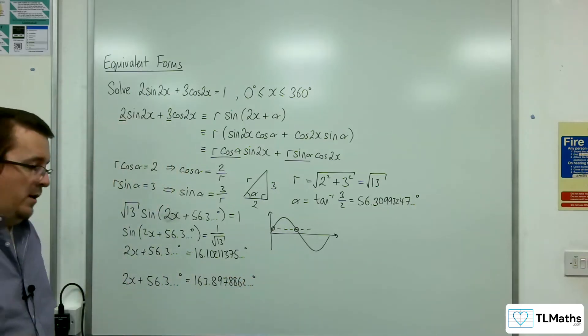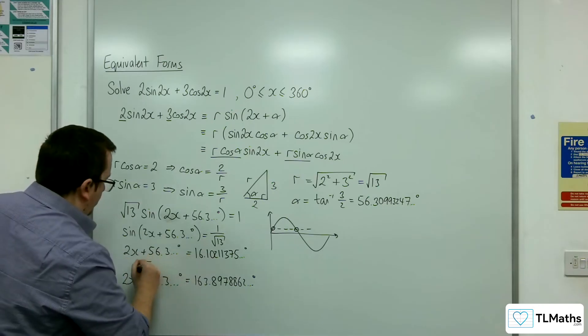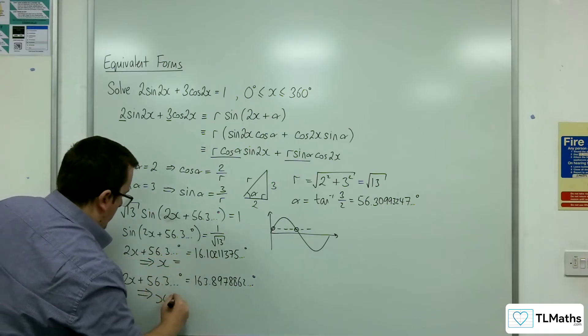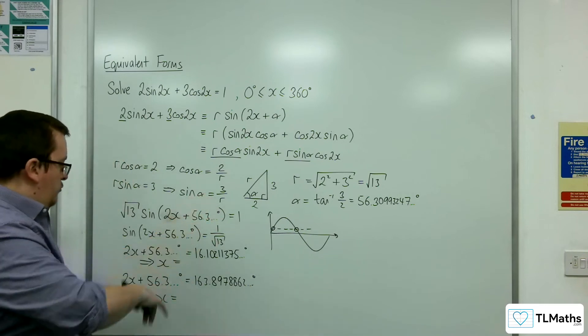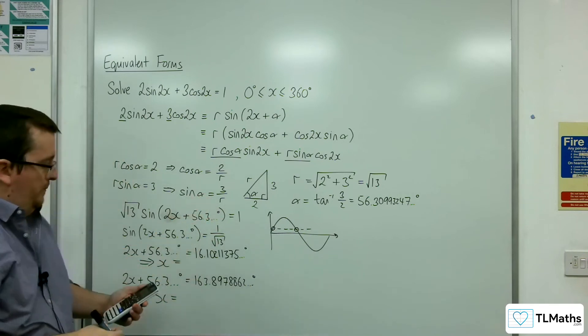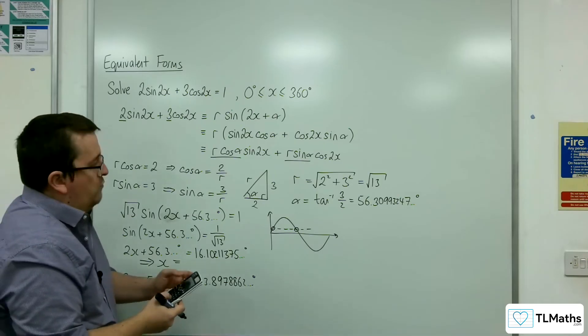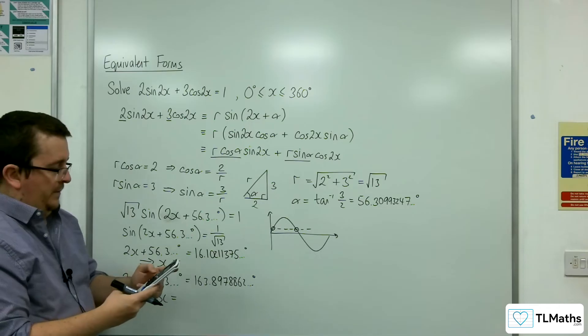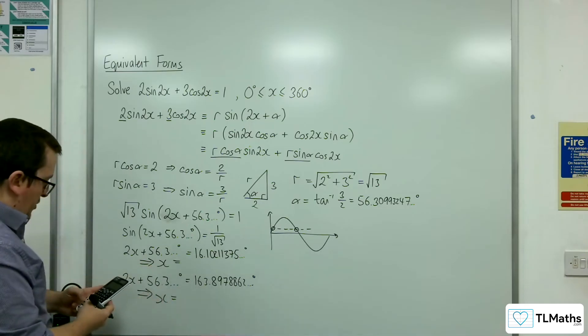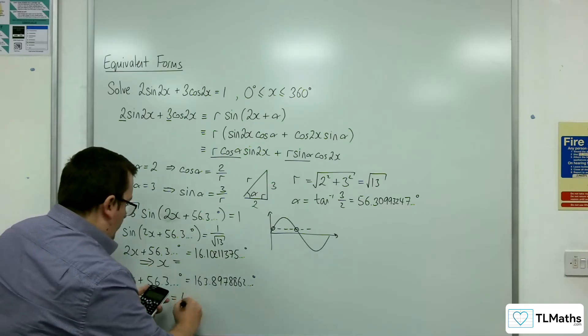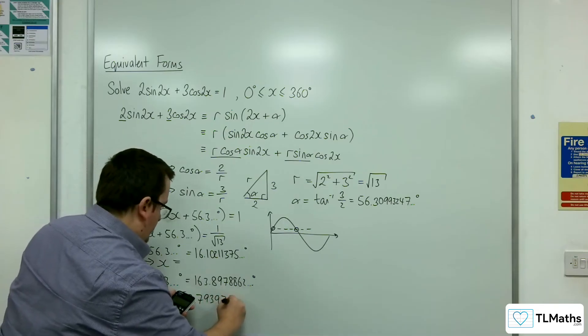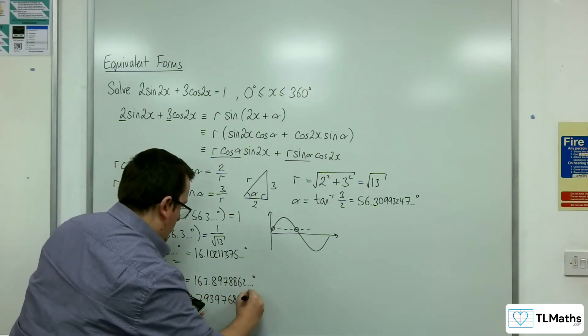Then I've got to apply the two transformations. I need to subtract 56.3 and then divide through by 2. So I'm going to subtract the inverse tan of 3 halves and then divide by 2. This one is 53.79397689 degrees.